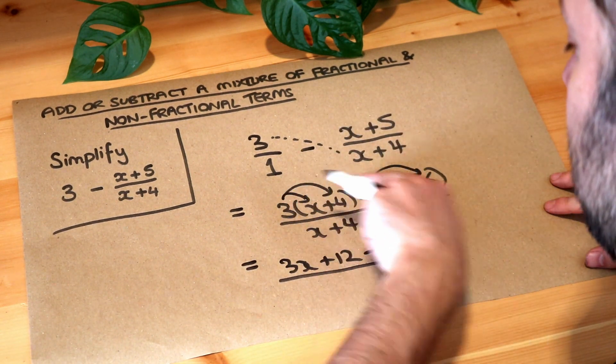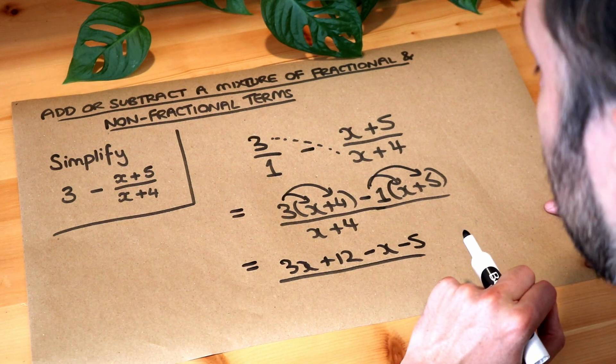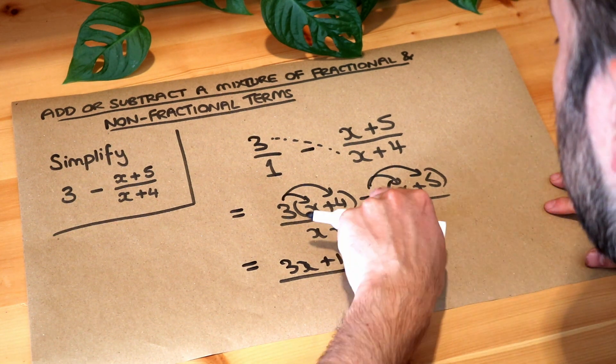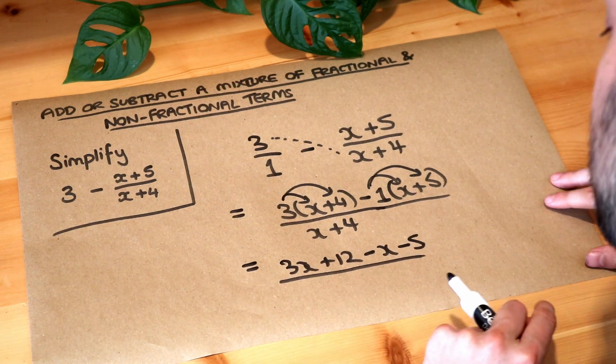It's really important to use brackets in this step. Otherwise, it's very easy to make a sign error. For example, you might just write minus one x plus five, rather than minus five.